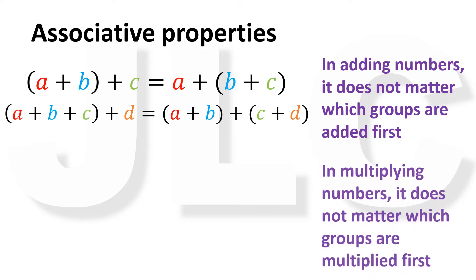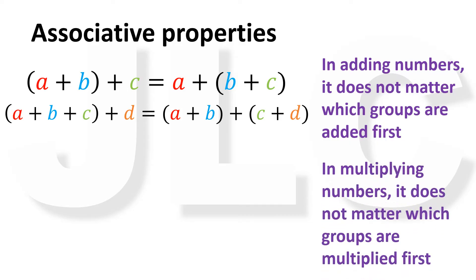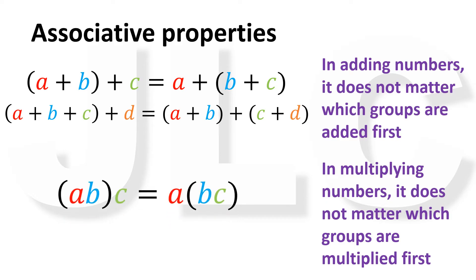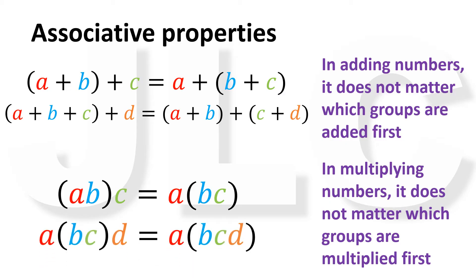Likewise, for multiplication, it doesn't matter which groups are multiplied first. The product of A and B times C is the same as A times the product of B and C. A times the product of B and C times D is the same as A times the product of B, C, and D. It doesn't matter how we arrange the order of precedence.